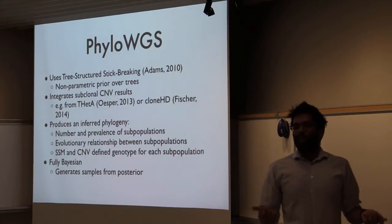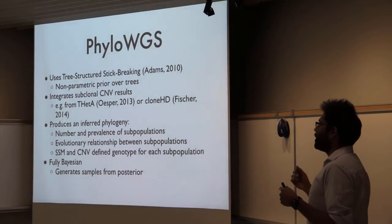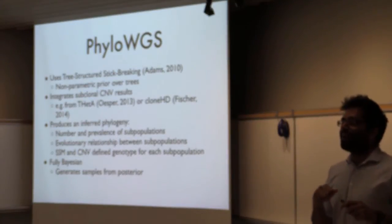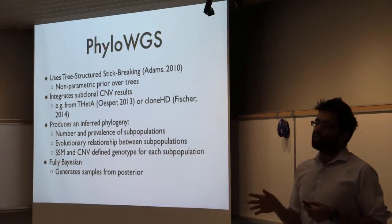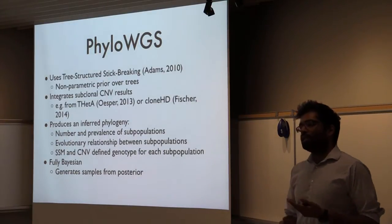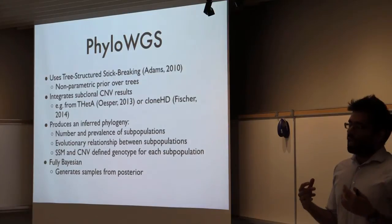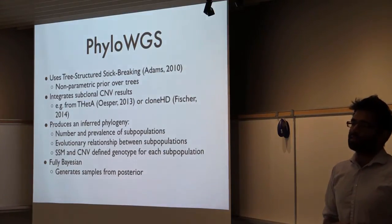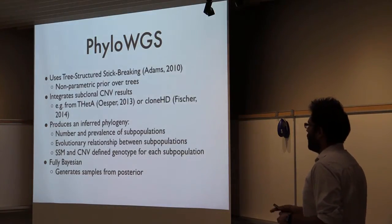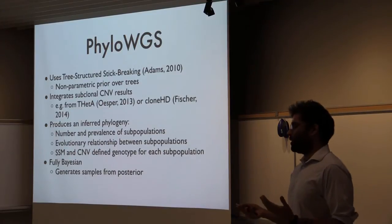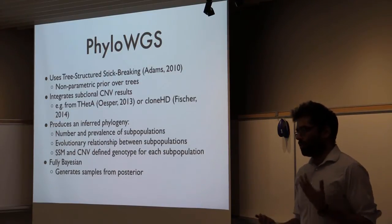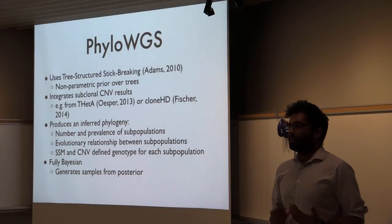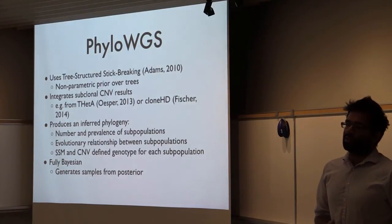We developed an algorithm called Phylo-WGS that integrates subclonal CNV calls from algorithms like Theta, CloneHD, or Titan into our reconstruction, and then corrects the variant allele frequencies based on where those CNVs are placed in the phylogeny. The output is an inferred phylogeny where we have a full SSM and CNV-defined genotype for each subpopulation, along with prevalence in the sample. It's a fully Bayesian method using MCMC sampling, so we're able to identify which parts of our reconstruction we're certain of and which parts are not.